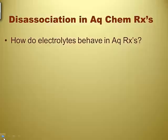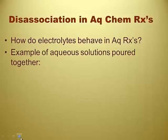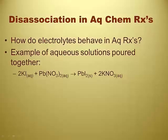What we're going to talk about is how electrolytes behave in aqueous reactions — figuring out what they do at the submicroscopic level. An example of aqueous solutions being poured together would be like lead iodide and potassium nitrate, which we already know about. We already know both of these are soluble. They're both strong electrolytes.